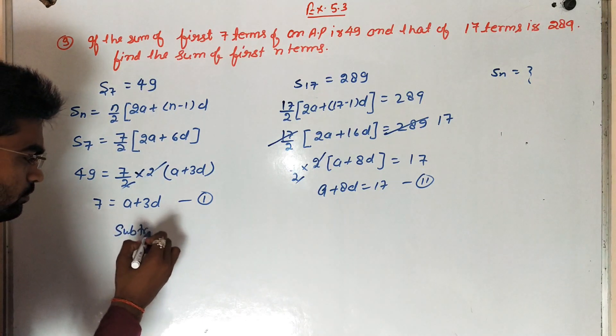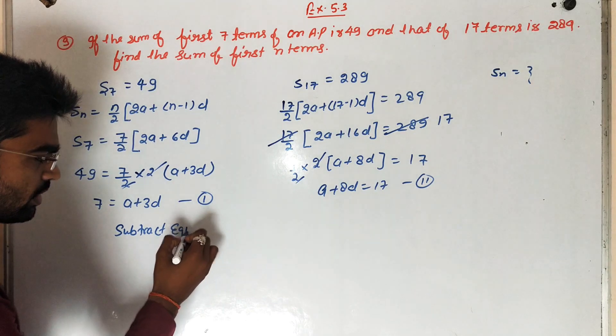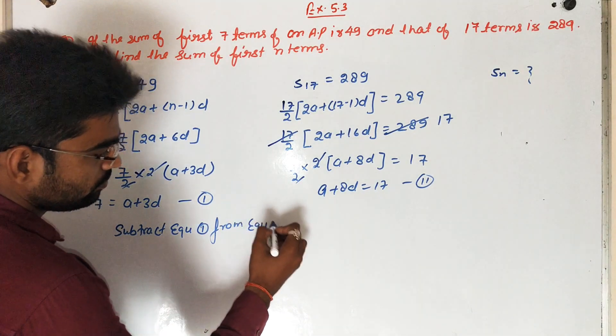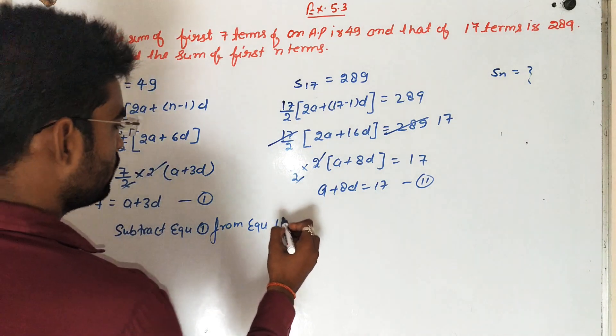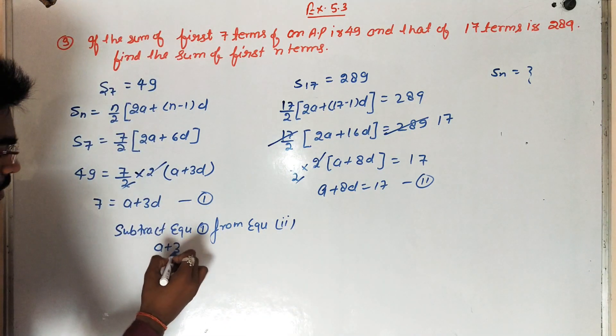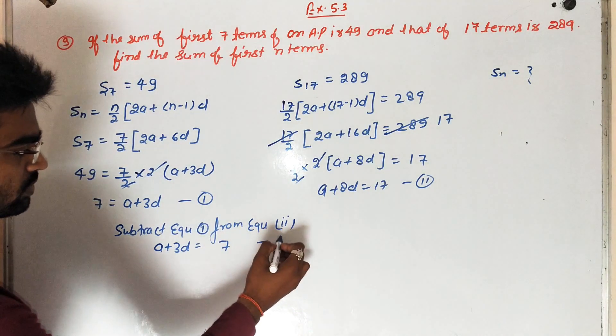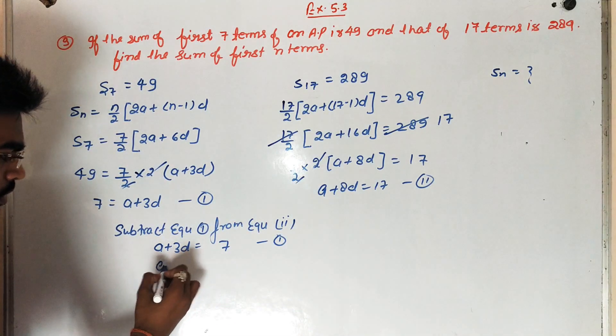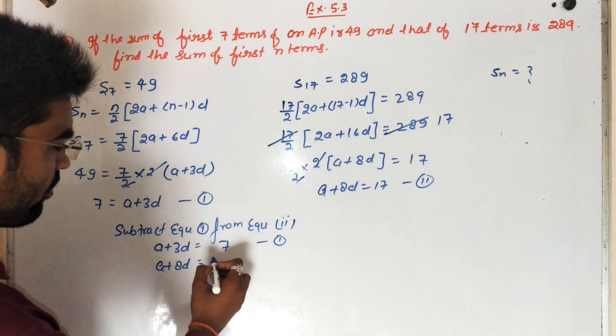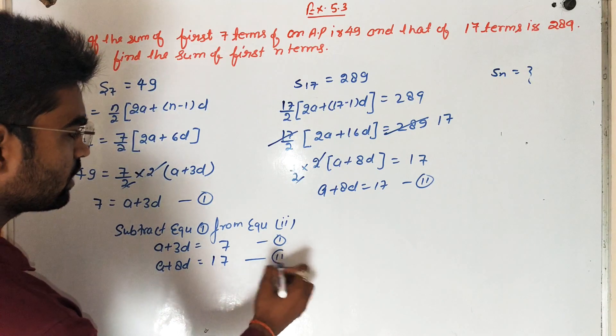So students, subtract equation first from equation second. So first we have to write A plus 3D is equal to 7 equation number first. And A plus 8D is equal to 17 equation number second.